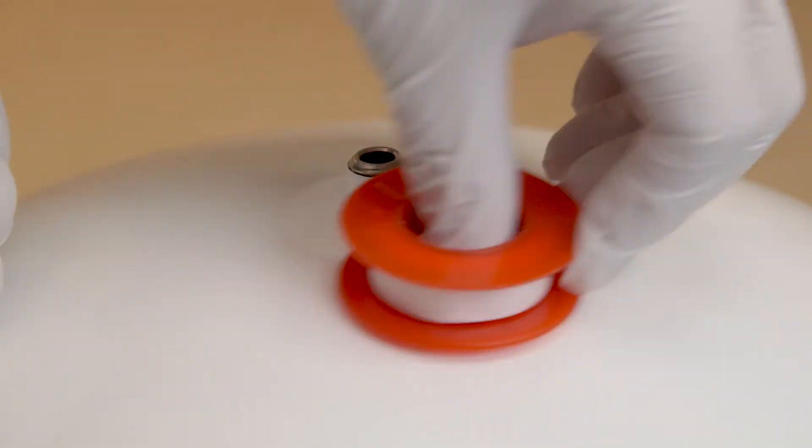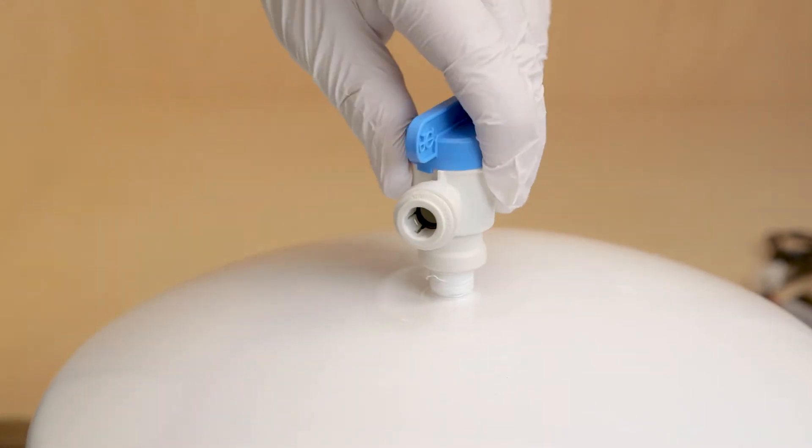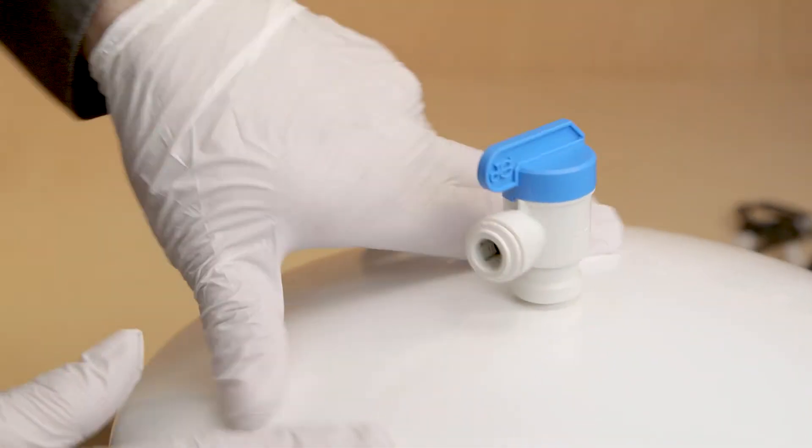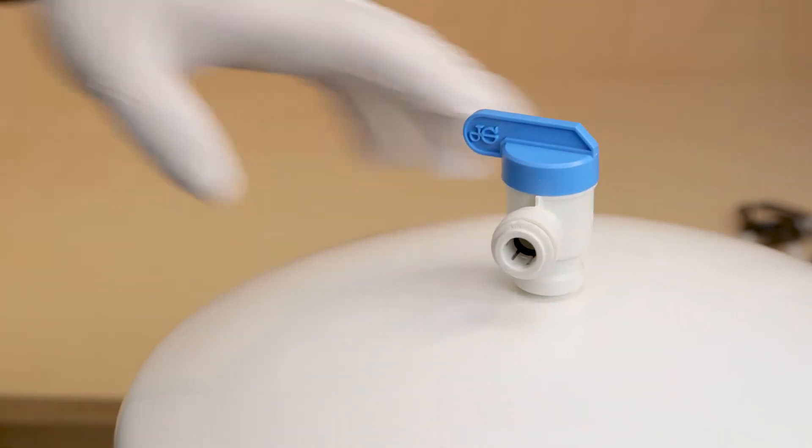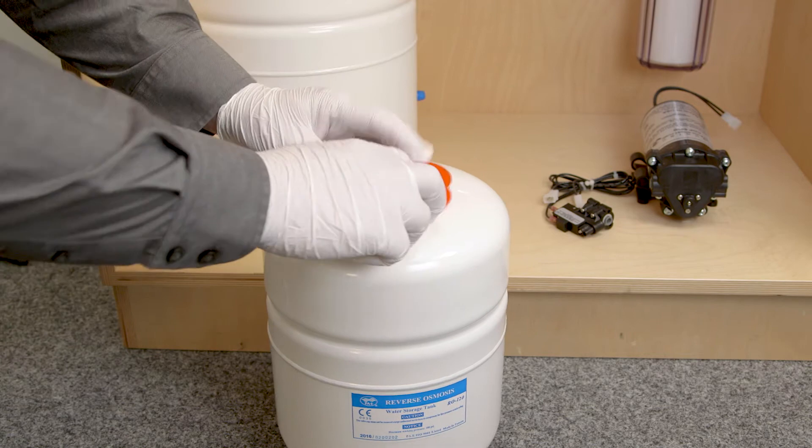Using thread tape, wrap the threads on each bladder tank. Take the three-eighths inch valve and hand tighten it to the larger RO tank. Do not over tighten this valve. Turn the blue valve 90 degrees to close it. Repeat this process with the one-quarter inch valve for the dental water tank.